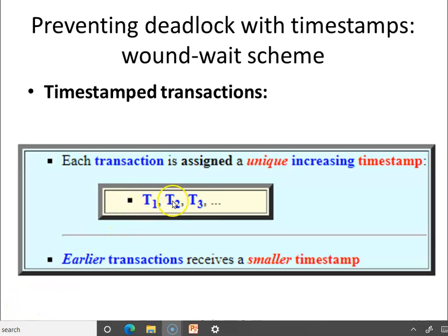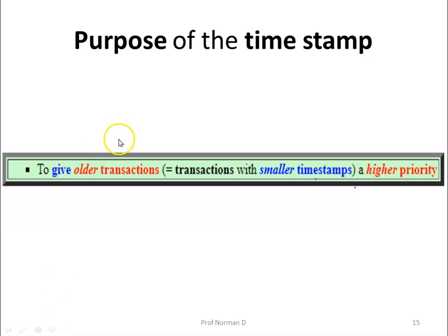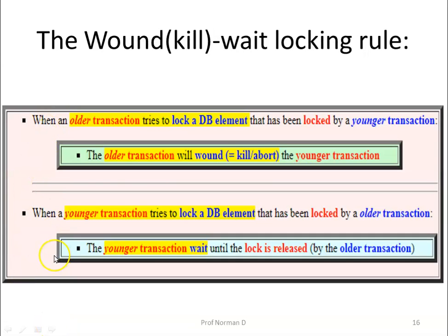Consider transactions T1, T2, and T3, each assigned a unique increasing timestamp so that earlier transactions receive a smaller timestamp and thus a higher priority — the same as in the previous protocol. There are two cases. When an older transaction tries to lock a database element locked by a younger transaction, the older transaction will wound or abort the younger transaction. Whereas when a younger transaction tries to lock a database element locked by an older transaction, the younger transaction will wait until the lock is released.